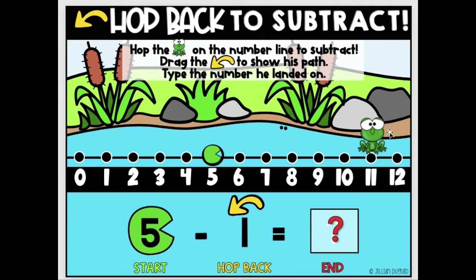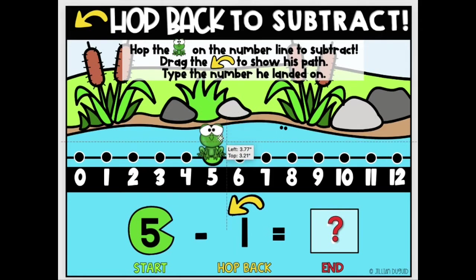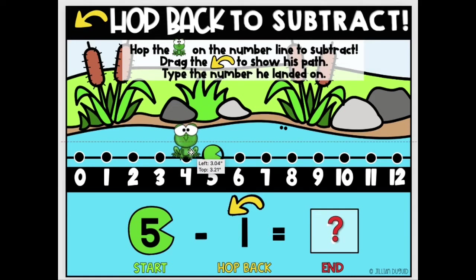You're going to be doing this yourself. You're going to use the frog to hop the number to subtract. On this one, he's going to start on number 5. The lily pad shows you where to start. What is this sign called? Minus. That means we're going to subtract 1 or hop back one number. 1. 5 minus 1 is 4.